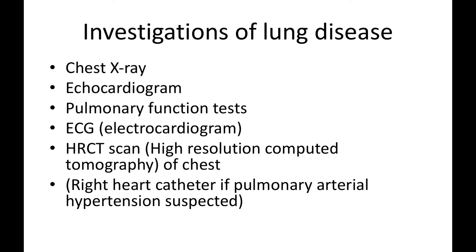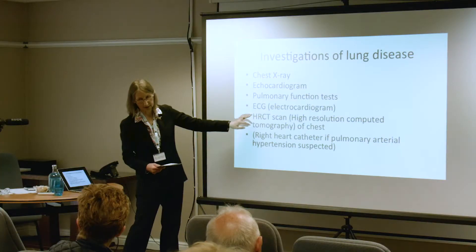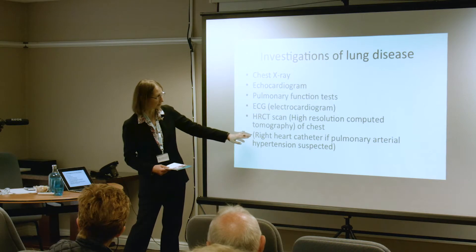We often get an ECG, or electrocardiogram — a very straightforward test. An HRCT scan, which stands for high resolution computed tomography, is a test where you go into a donut-shaped scanner — it's very quick — and it's very sensitive for looking at lung fibrosis, showing both minor and more extensive degrees of fibrosis. We probably wouldn't repeat this test many times, but would do it at one or more points depending on the clinical situation.